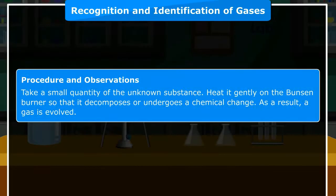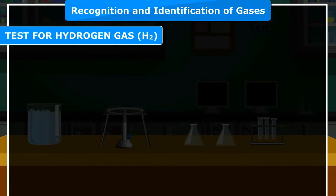Procedure and observations: Take a small quantity of the unknown substance. Heat it gently on the Bunsen burner so that it decomposes or undergoes a chemical change. As a result, a gas is evolved.